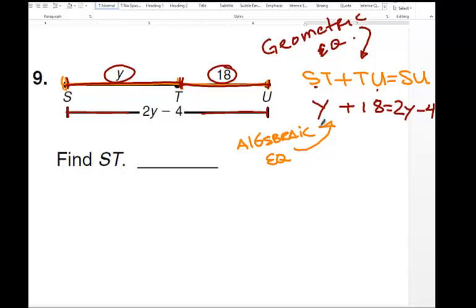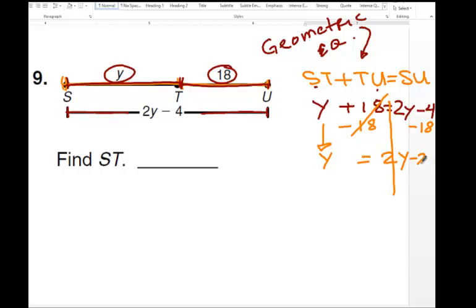Then you have to solve for this. Let's solve for it and hopefully you agree with that. We did a whole bunch of that last year. So first I will eliminate the constant, which is 18, so I need a negative 18. Let's cancel that so we have Y equals 2Y minus 22.